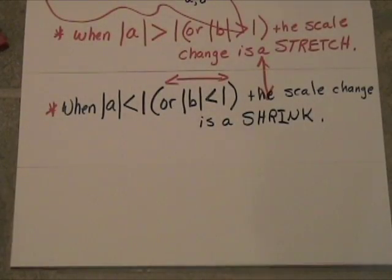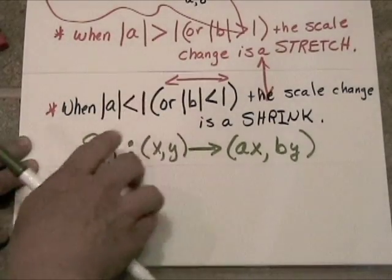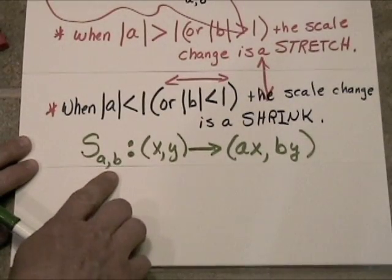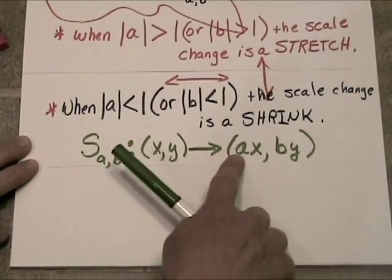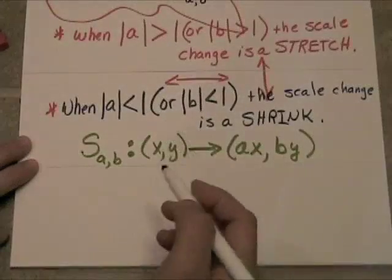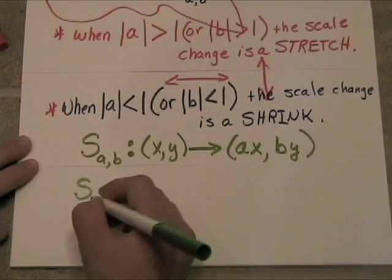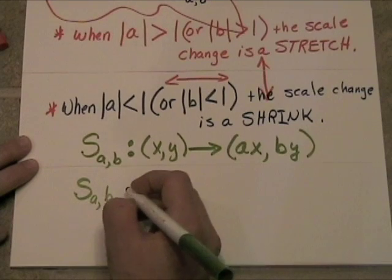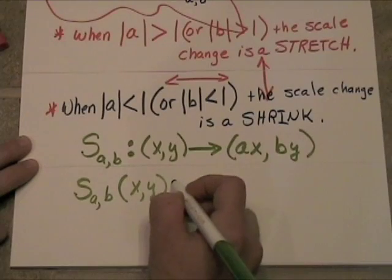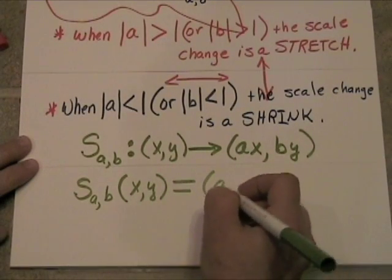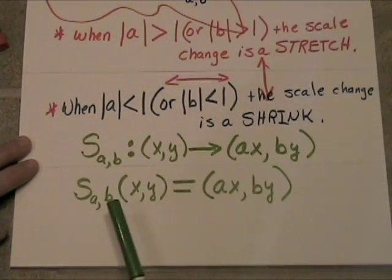Let's take a quick look at notation. We read this notation: the scale change sub a comma b maps x comma y onto ax comma by. The Euler function notation would look like this: the size change sub a comma b of x comma y equals ax comma by. Two different ways of saying exactly the same thing.